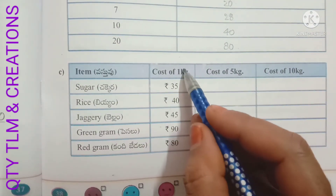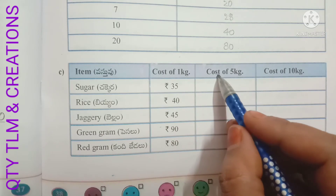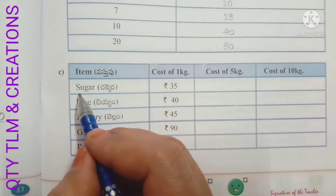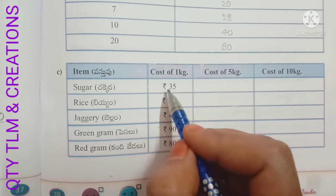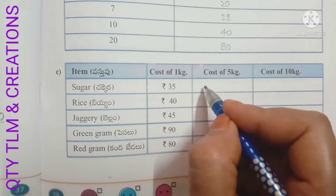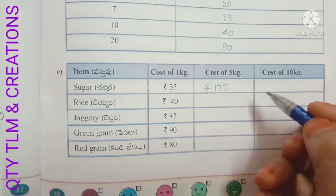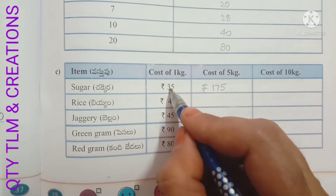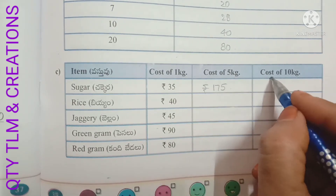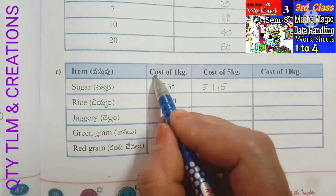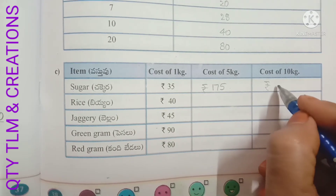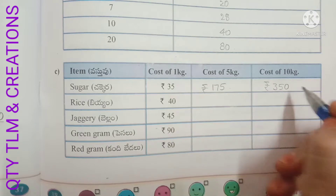Next C: item — cost of 1 kilogram, cost of 5 kilograms, cost of 10 kilograms. First: sugar. Cost of 1 kg equals 35 rupees. Cost of 5 kg: 35 into 5 equals 175 rupees. Cost of 10 kg: 35 into 10 equals 350 rupees.